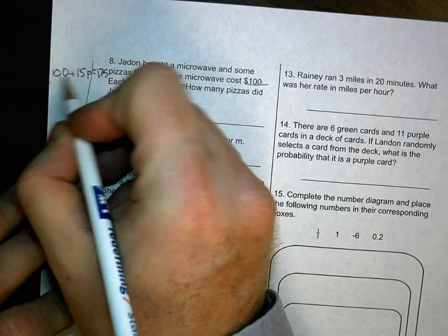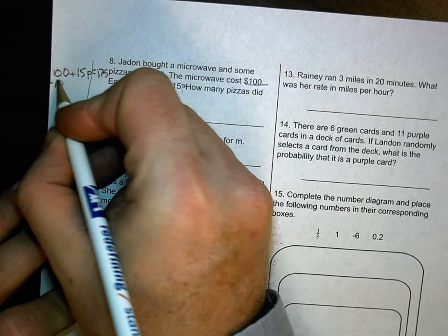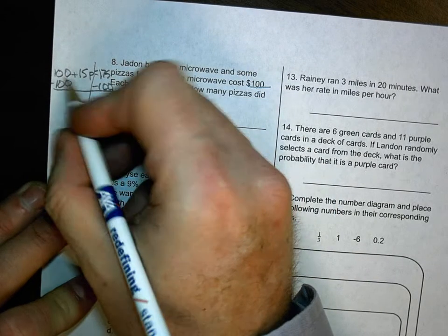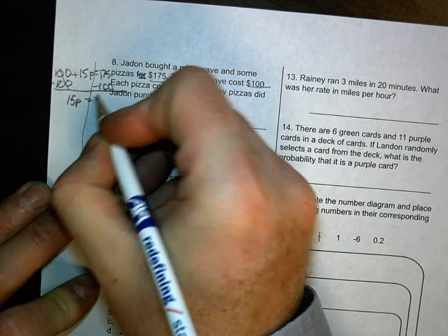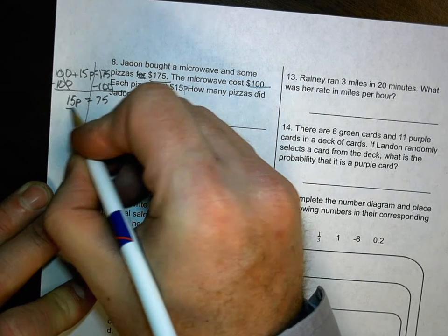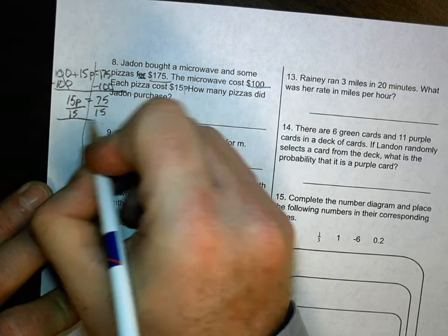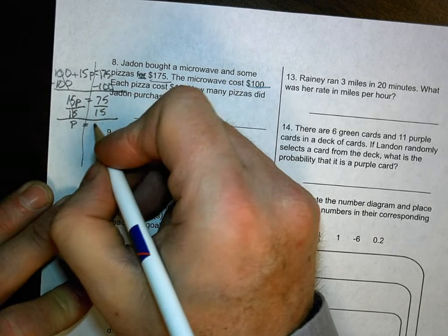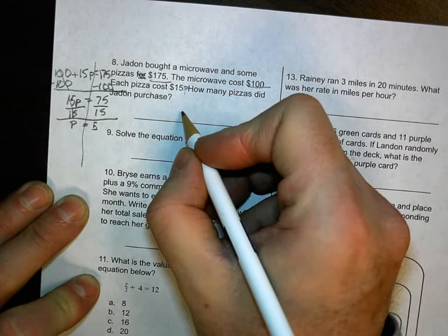I subtract the number with the variable, or the number being added to the number with the variable. It's 100, so 100 subtracted from both sides. So it's a little squishy in here. I apologize for that. So 15p equals $175 minus 100 is $75. I divide both sides by the coefficient, or the number with the variable. That goes away. 75 divided by 15 is 5. So Jayden purchased 5 pizzas.